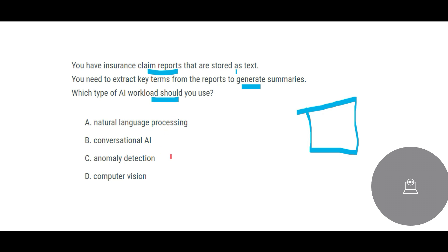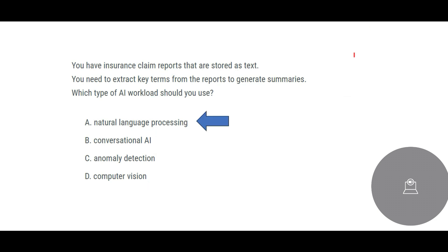We are not doing computer vision here — computer vision is like analyzing CCTV footage. This is not conversational AI either — nobody is talking to you, there is no requirement to talk to something like Siri and get a response. Anomaly detection also does not apply — the question is not saying some data have anomalies; it is saying extract key elements and generate summaries. The final answer is natural language processing — you can extract key terms from the reports and generate summaries.